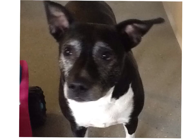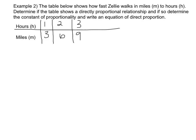This is Zellydog. She is what we call slow and steady. This example says, the table below shows how fast Zellie walks in miles m to hours h. So, determine if the table shows a directly proportional relationship. And if so, determine the constant of proportionality and write an equation of direct proportion.